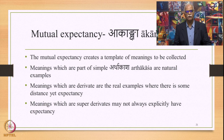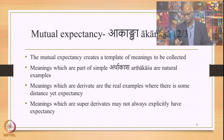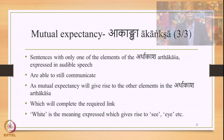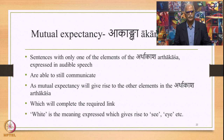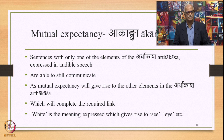Meanings which are super-derivates may not always explicitly have expectancy from simple as well as derivative Arthakasha, but in general even super-derivates will have expectancy. Sentences with only one of the elements of the Arthakasha expressed in audible speech are still able to communicate, because the mutual expectancy will give rise to the other elements in the Arthakasha. This mutual expectancy giving rise to the other elements — be it simple, derivative, or super-derivative — will complete the required link, even though the word expressing that link is not explicitly expressed in audible speech.